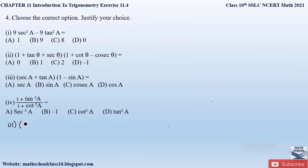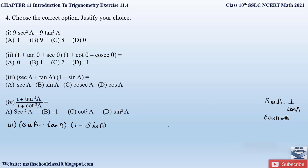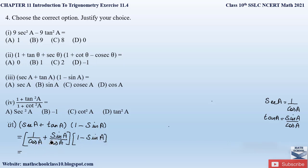The third part of the question is: (secant A plus tan A) into (1 minus sin A). Again, let us convert the trigonometric ratios into the form of sine and cos. Secant A can be written as 1 by cos A, and tan A can be written as sin A by cos A. Since the denominators are the same, we can add the numerators, giving us (1 plus sin A) divided by cos A, multiplied by (1 minus sin A).